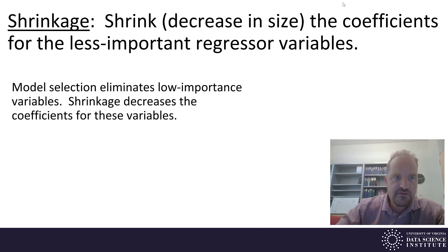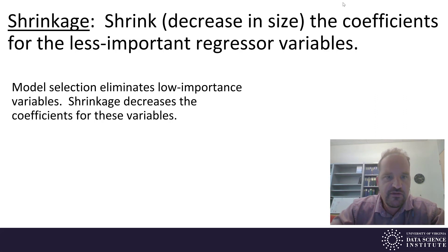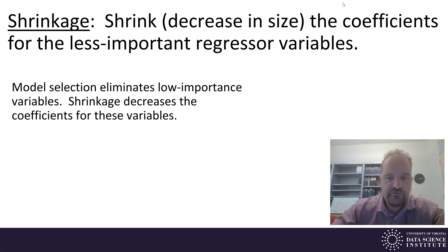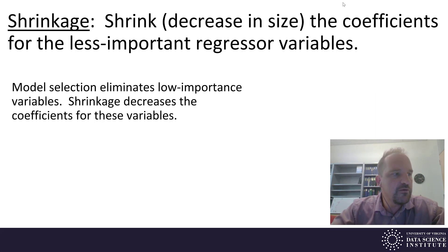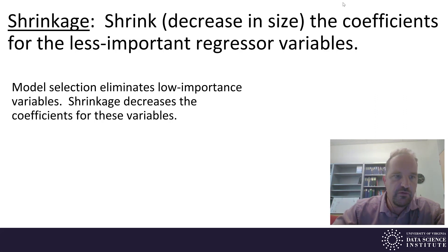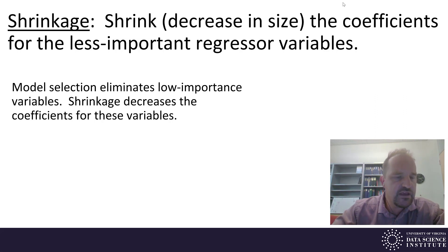This is similar to model selection or subset selection that we've done previously. In subset selection, we reject some of the variables completely, and then we do our linear regression with the remaining ones. Those variables that we reject are the low-importance variables. That's the process of model selection or subset selection.